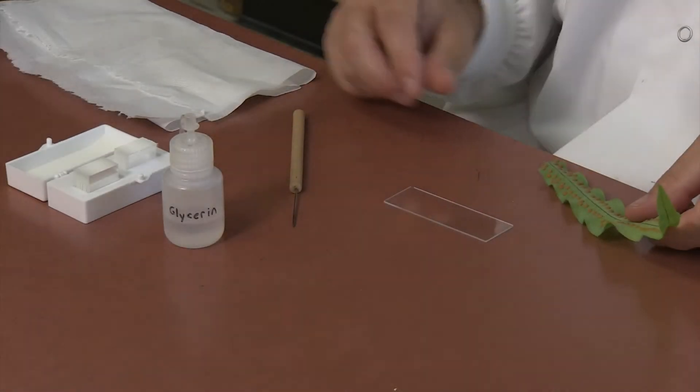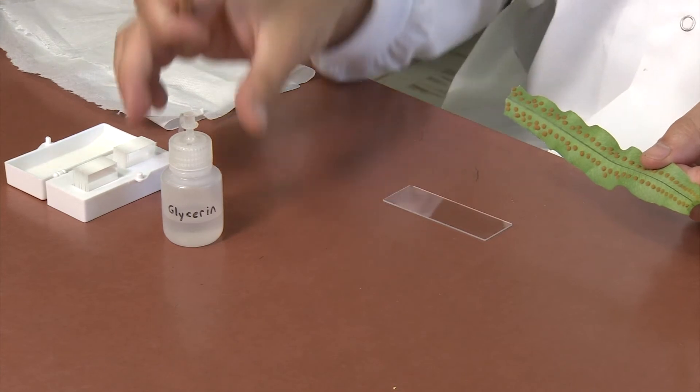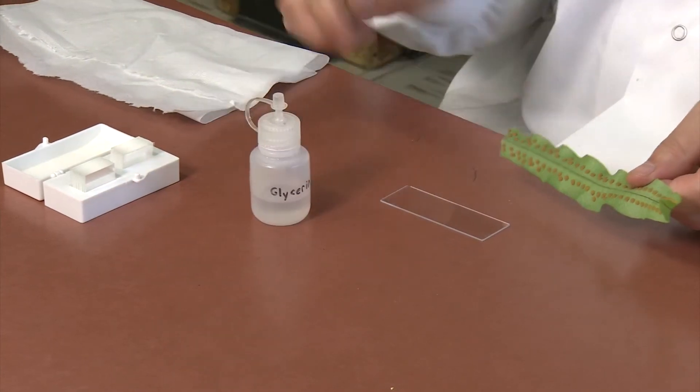In addition to slides and cover slips, you will need a fern frond with sorai, a dissecting needle, and glycerin provided at the side bench.